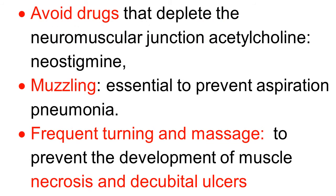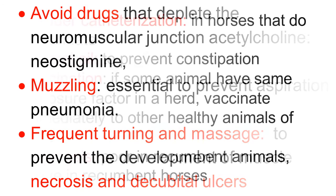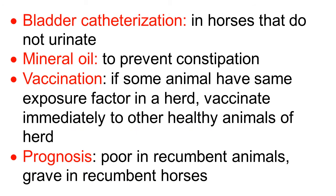Remember to avoid drugs that deplete neuromuscular junction acetylcholine, such as neostigmine. Muzzling is very essential to prevent aspiration pneumonia complications, which is the most common complication in horses. Frequent turning of the animal and massage of the limbs is required to prevent muscle necrosis and further muscle weakness. Treatment of muscle ulcers, if present, is also required.